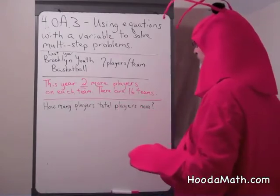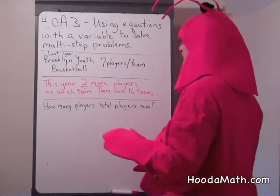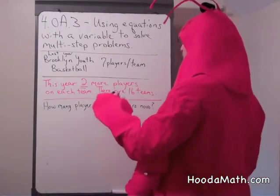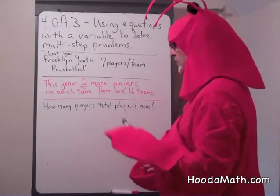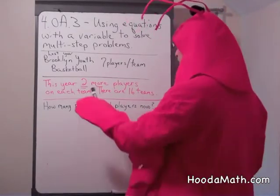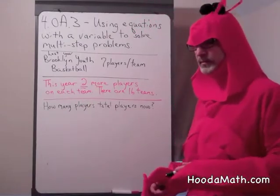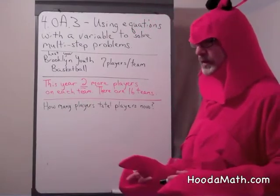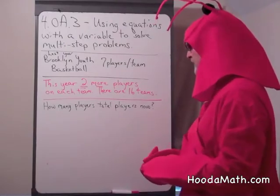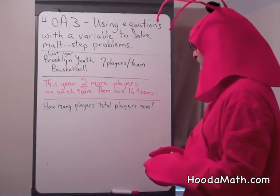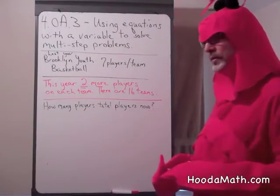Let's look at this problem. Last year, in a basketball league — the Brooklyn Youth League — there were seven players on each team. This year, two more players were added to each team because it was a very popular league. There are 16 teams. How many total players are there now?